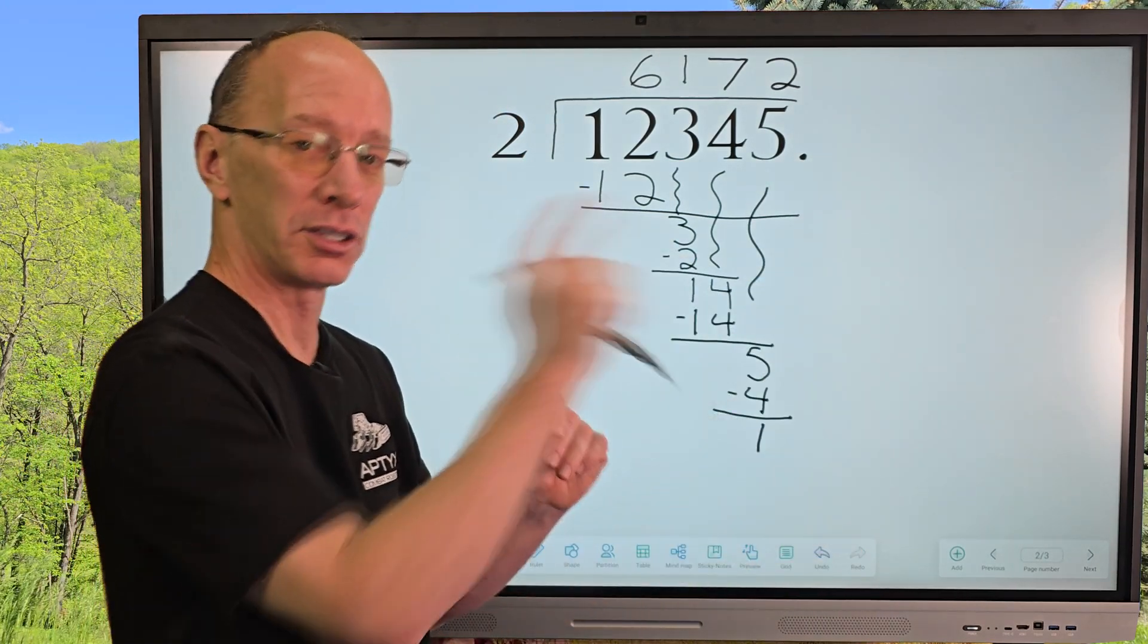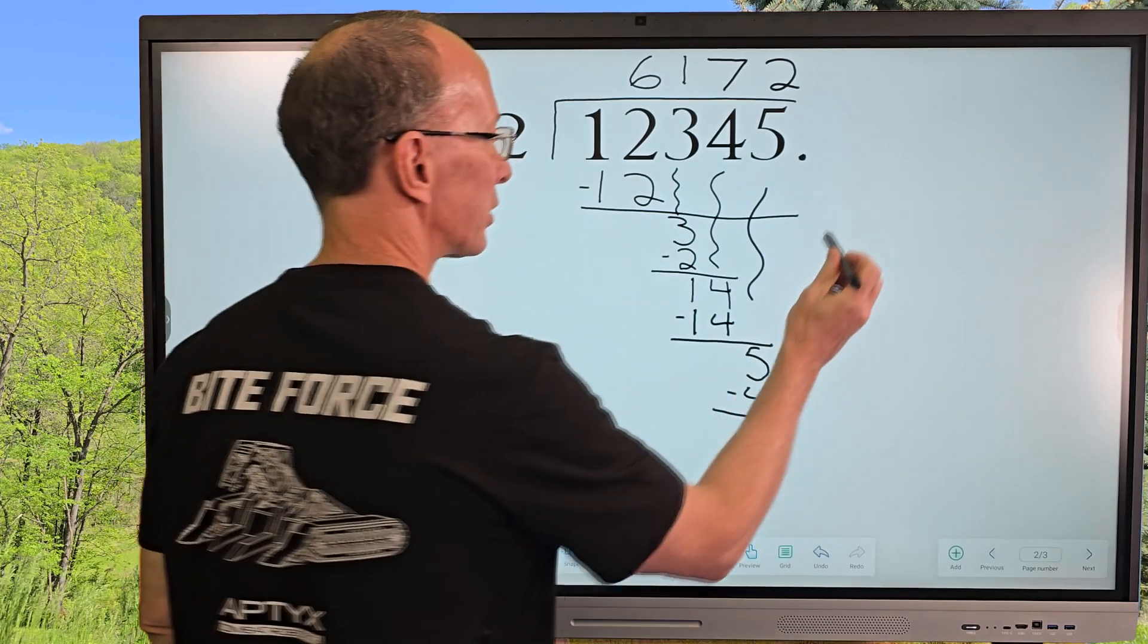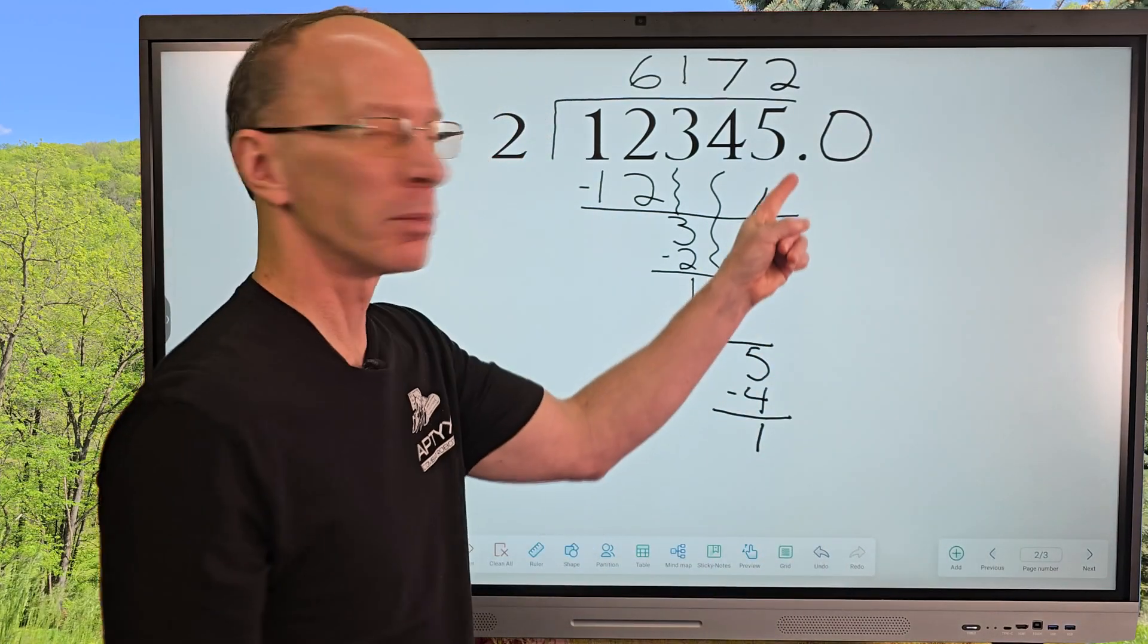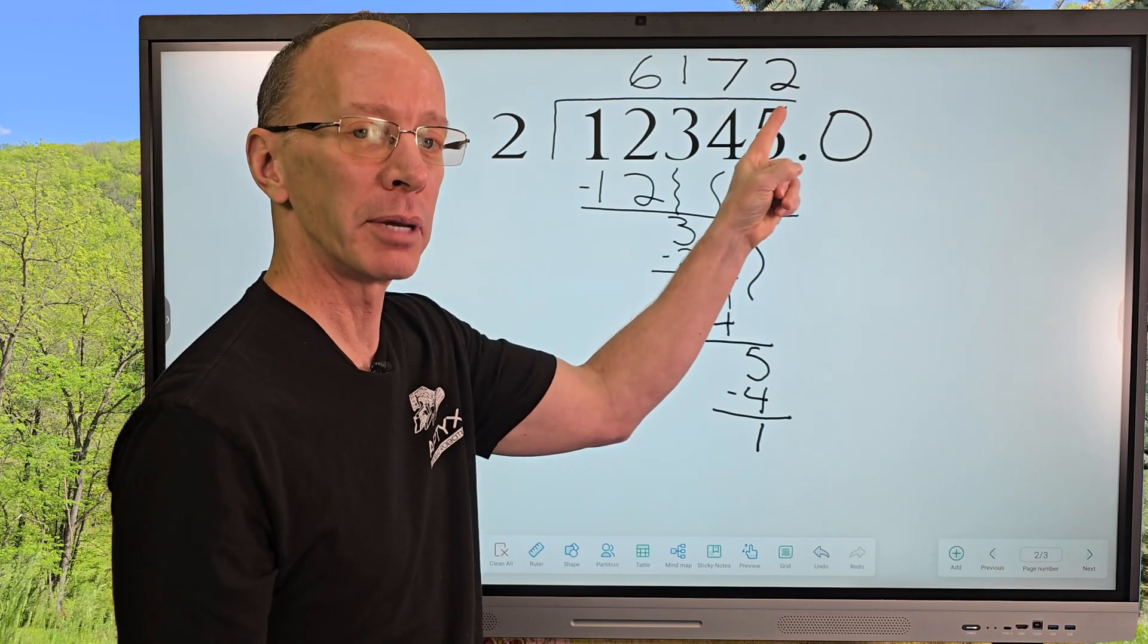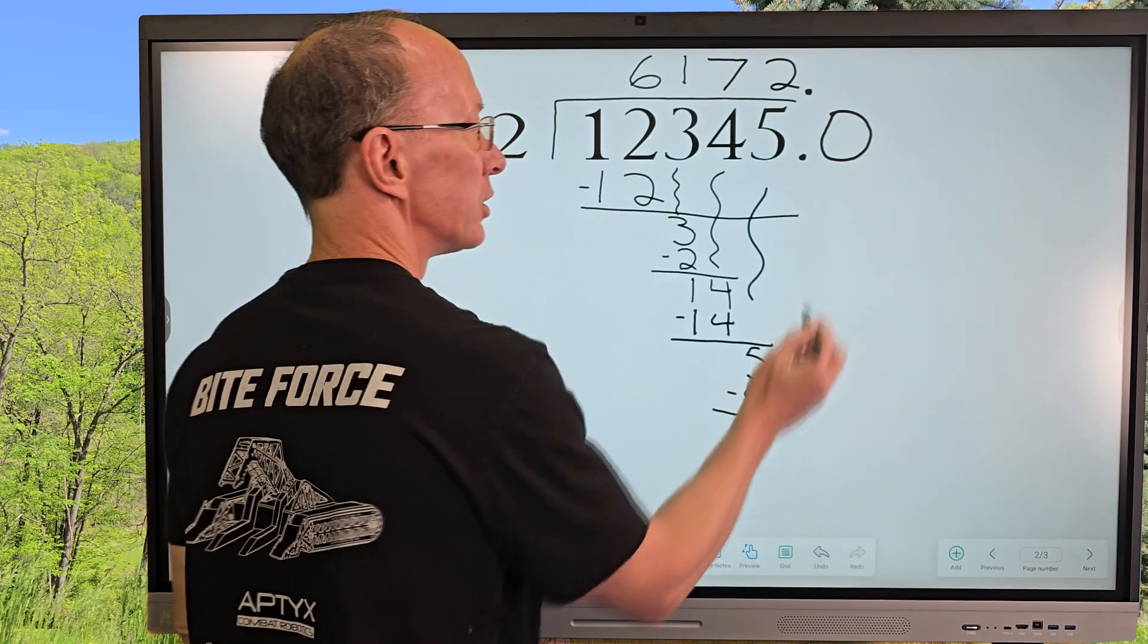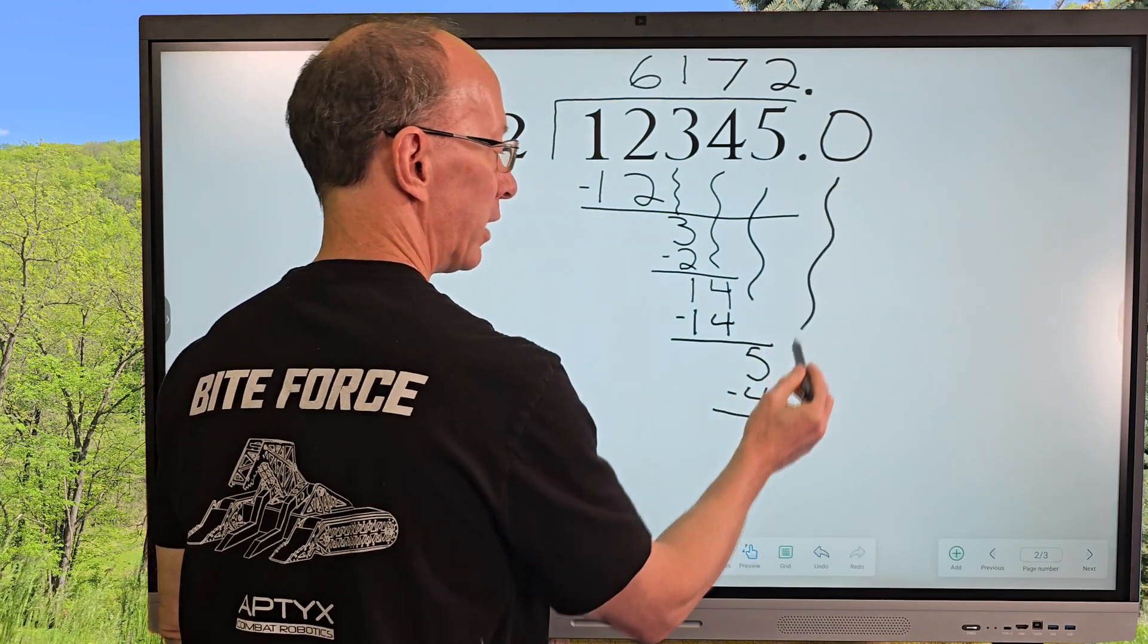When I do decimals, that means I can add as many zeros as I want to that side. So let's go ahead and put a 0 right here. Now when I put a decimal here, that means I also have to put one up here in my answer. I need to put a decimal here too. So I can bring that 0 all the way down right here, and now this will be a 10.